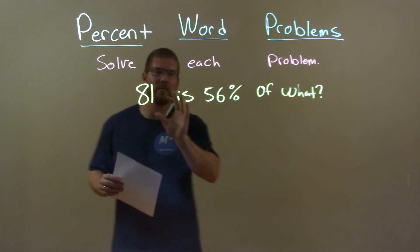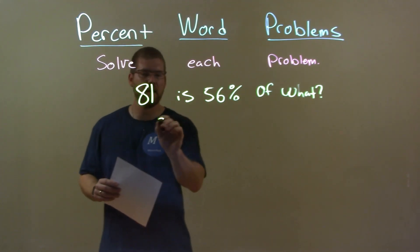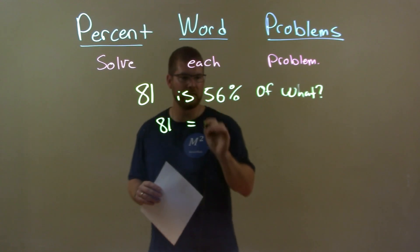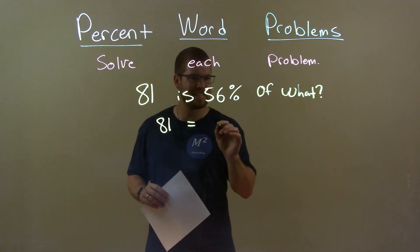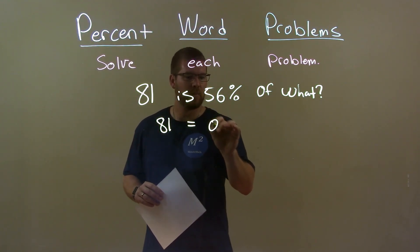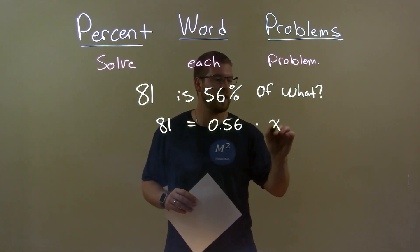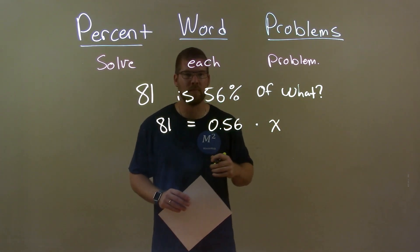Okay, well, let's convert this into an equation. 81 equals 56%, which we can write as a decimal, 0.56, times our variable x, what we're looking for.